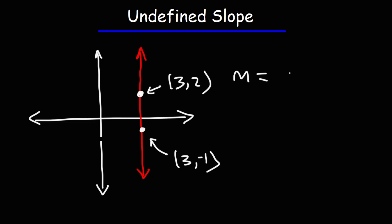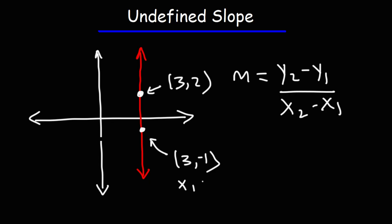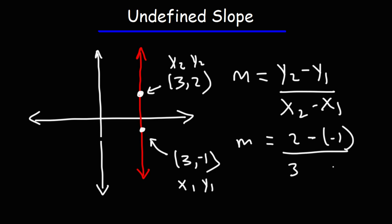To find the slope we use this formula — it's rise over run: y2 minus y1 over x2 minus x1. We define (3, -1) as x1, y1 and (3, 2) as x2, y2. Using that formula: y2 is 2, y1 is negative one, x2 is 3, and x1 is 3. Two minus negative one is the same as two plus one, which is three. Three minus three is zero, so notice that we have a zero in the denominator of the fraction.